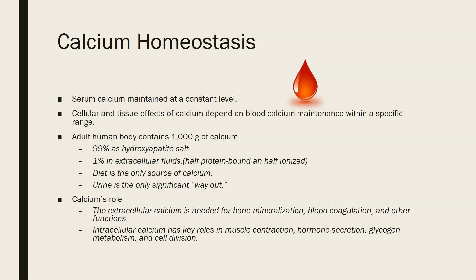The adult human body contains about 1,000 grams of calcium, but 99% of it exists as hydroxyapatite salt, the crystal that makes bones strong, so the majority of calcium is located in your bones. The remaining 1% is in intra- and extracellular fluids, and of what circulates in extracellular fluid, half is protein-bound and the other half exists as ionized calcium.